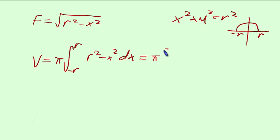This is going to give us pi times r squared x minus one-third x to the third, evaluated between negative r and r.